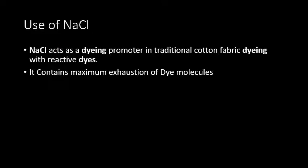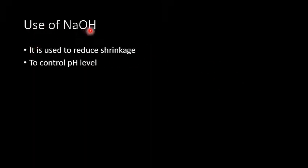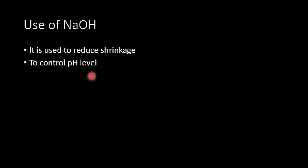Use of NaOH: It is used to reduce shrinkage. NaOH का main function है cotton fabric की shrinkage को reduce करना। जब fabric produce हो चुका होता है और उसे wash करते हैं तो वह shrink हो जाता है। NaOH का इस्तेमाल इसलिए किया जाता है ताकि fabric कम shrink हो। साथ में यह pH level को control करता है। Fabric usually mercerized under tension to reduce shrinkage and to control pH level.